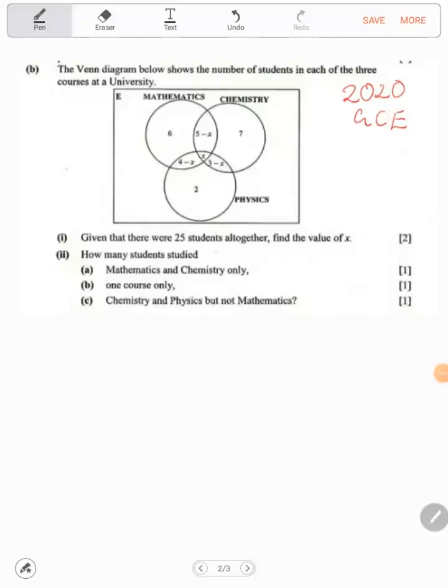Hello, the question says the Venn diagram below shows the number of students in each of the three courses at the university: mathematics, chemistry, and physics.